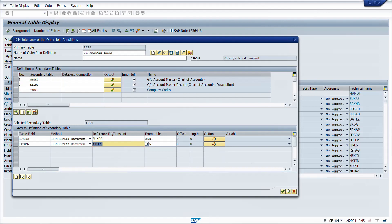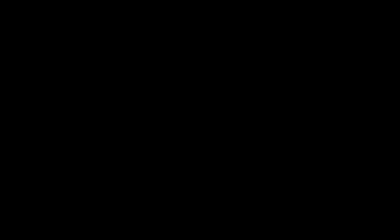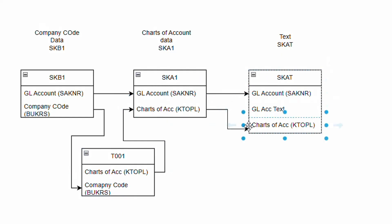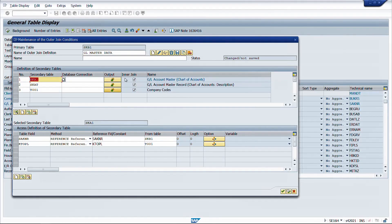We have now done the mapping for all three tables with the base table SKB1. To summarize: GL account in SKB1 is linked to SKA1; company code in SKB1 is linked to T001; charts of account in T001 is linked to SKA1; and SKAT is mapped via GL account and charts of account to SKA1 or SKB1. Once the mapping and output fields are set and inner join is enabled, click execute. The system will ask whether to save this join - click yes.